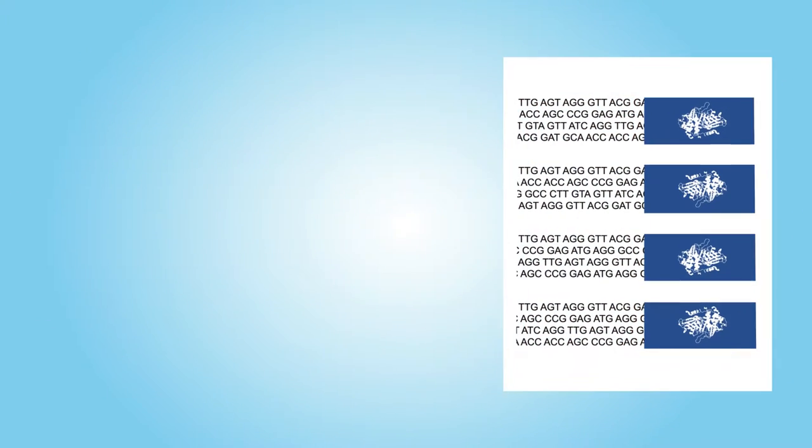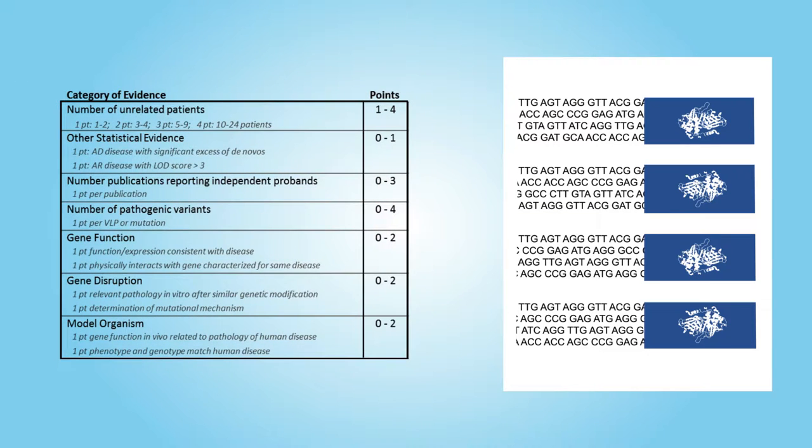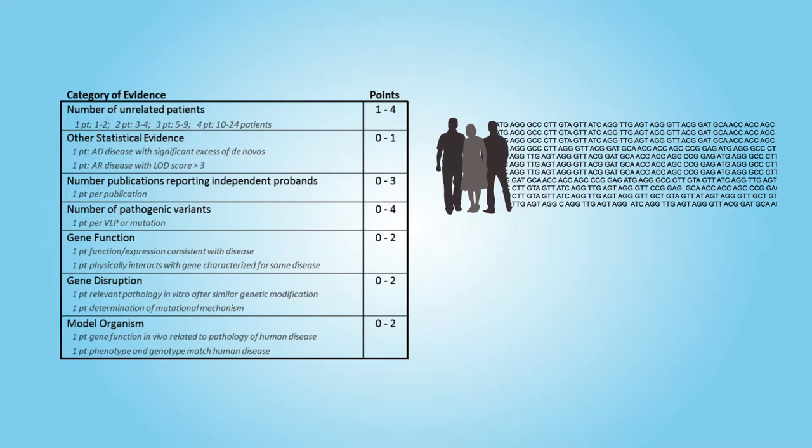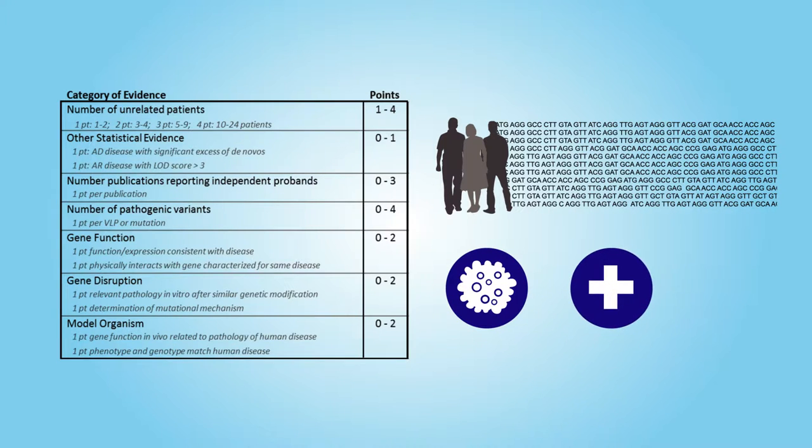The system works by looking at whether published evidence supports that certain changes in a given gene are the true cause of a condition. The group considered several factors, such as how many patients with mutations in the same gene are affected by the same disease, how many different mutations in the same gene cause a similar set of symptoms, and whether mutating a gene in cells and animals in the lab produces symptoms that mimic the human disease.